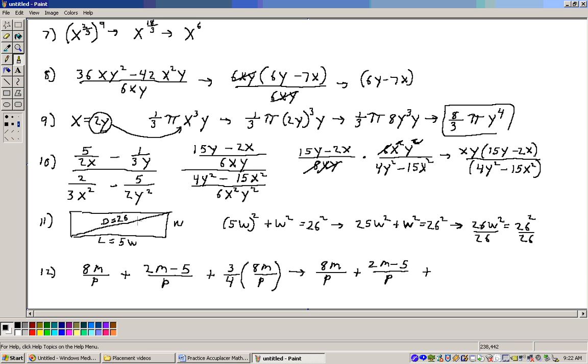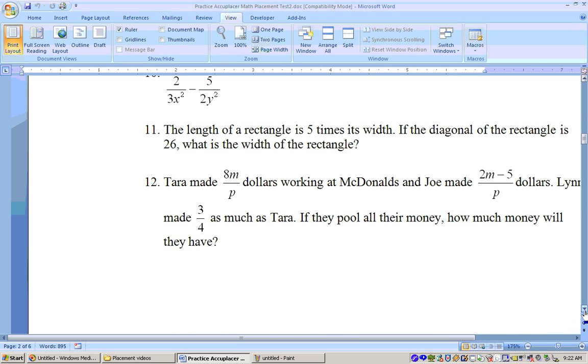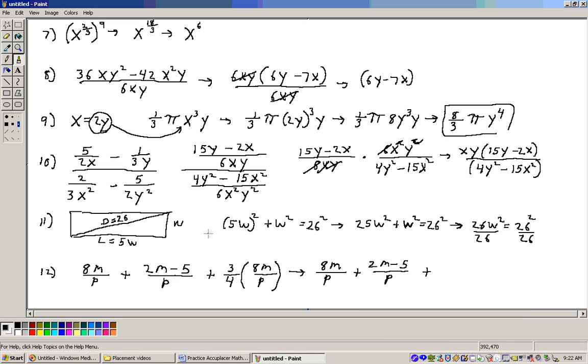This one says, let's take a look at this problem on 11. It says that the, scroll down here a little bit, says the length of a rectangle is 5 times its width. The diagonal of the rectangle is 26. What is the width? Well, here's the situation we have on this. It says the length is 5 times its width. So here's my rectangle. The width is right here, and my length is 5 times that. And my diagonal here is 26.